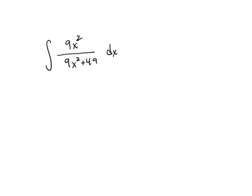So while we were practicing for our quiz, we ran into this problem. What we're going to do is use long division to reduce this improper fraction. The goal is to take this integrand, which is 9x squared over 9x squared plus 49, and turn it into something else.